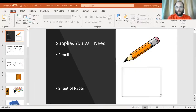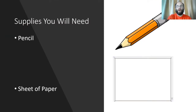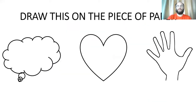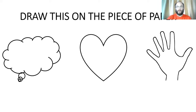I'm over here in this corner now. Let's bring the PowerPoint up. For this lesson, all you need is a pencil and a sheet of paper. Go ahead and pause the video while you grab those two supplies. Now that you have your pencil and paper, I want you to draw this on that piece of paper — make all of them big enough where you can write one word in them. On the left, you have a pink bubble. In the middle, you have a heart. And on the right, you have a hand. Go ahead and pause the video so you can draw those. It doesn't have to be perfect — just do your best.